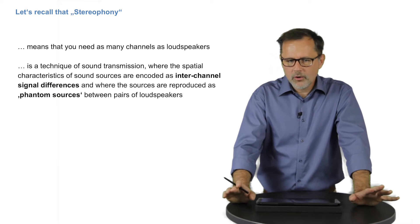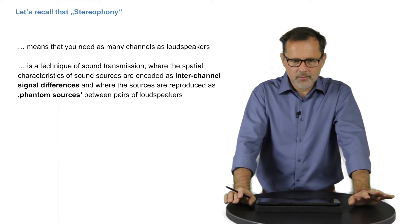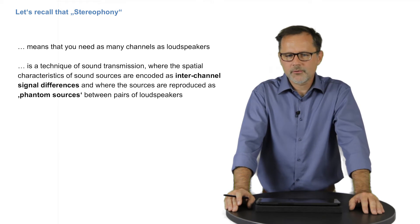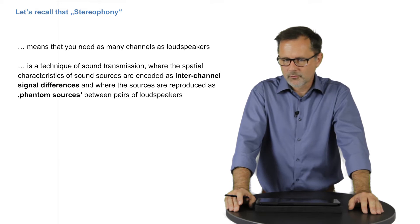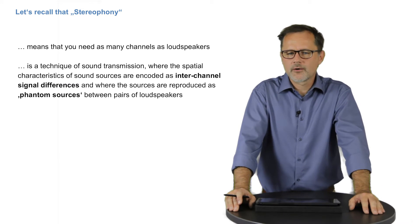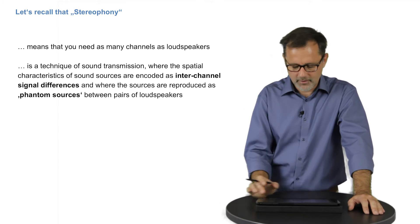Let's recall from part one that the term stereophony is used both as a mode of reproduction with at least two loudspeakers, and as a technique of spatial encoding where you have as many transmission channels as loudspeakers, and where the interchannel signal differences are used to produce phantom sources between pairs of loudspeakers.